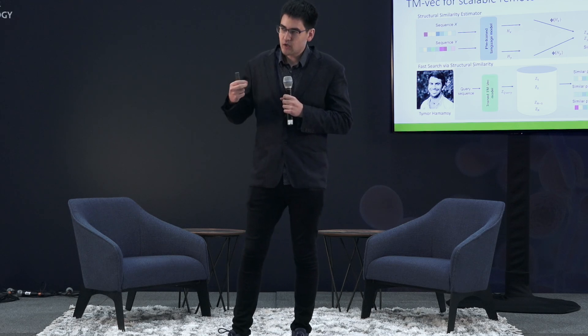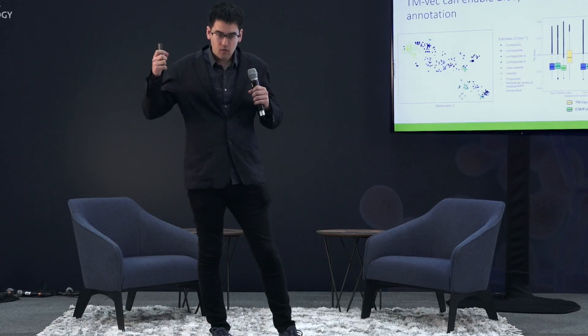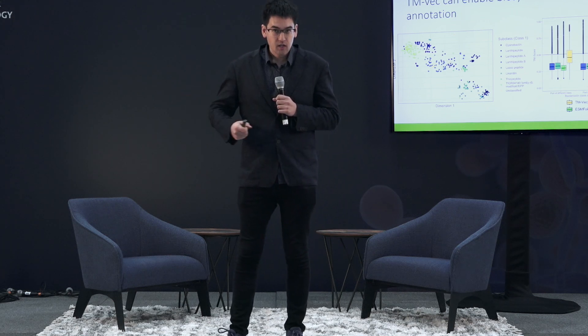Not only can we accurately align structures, we can do it fast. I teamed up with a PhD student, Timor Hamasi, who designed another neural network that can represent proteins as vectors, allowing you to compute structural similarity quickly. He can also build databases of millions of proteins, allowing you to search these databases by structural similarity within seconds.